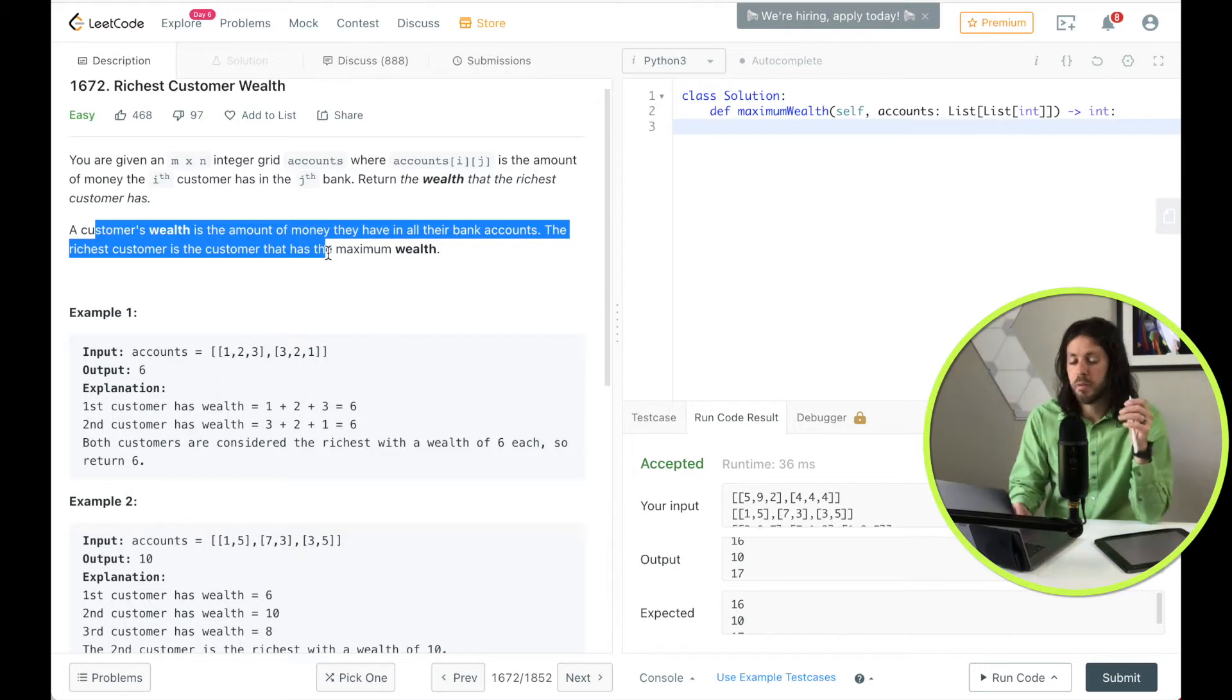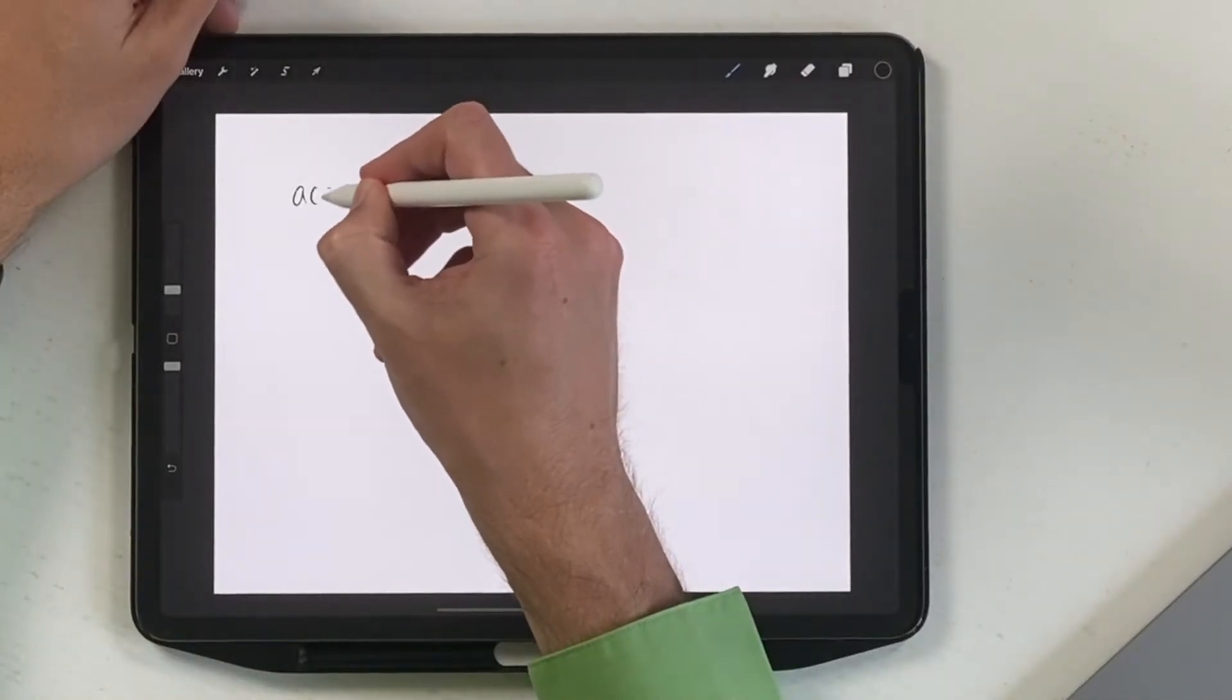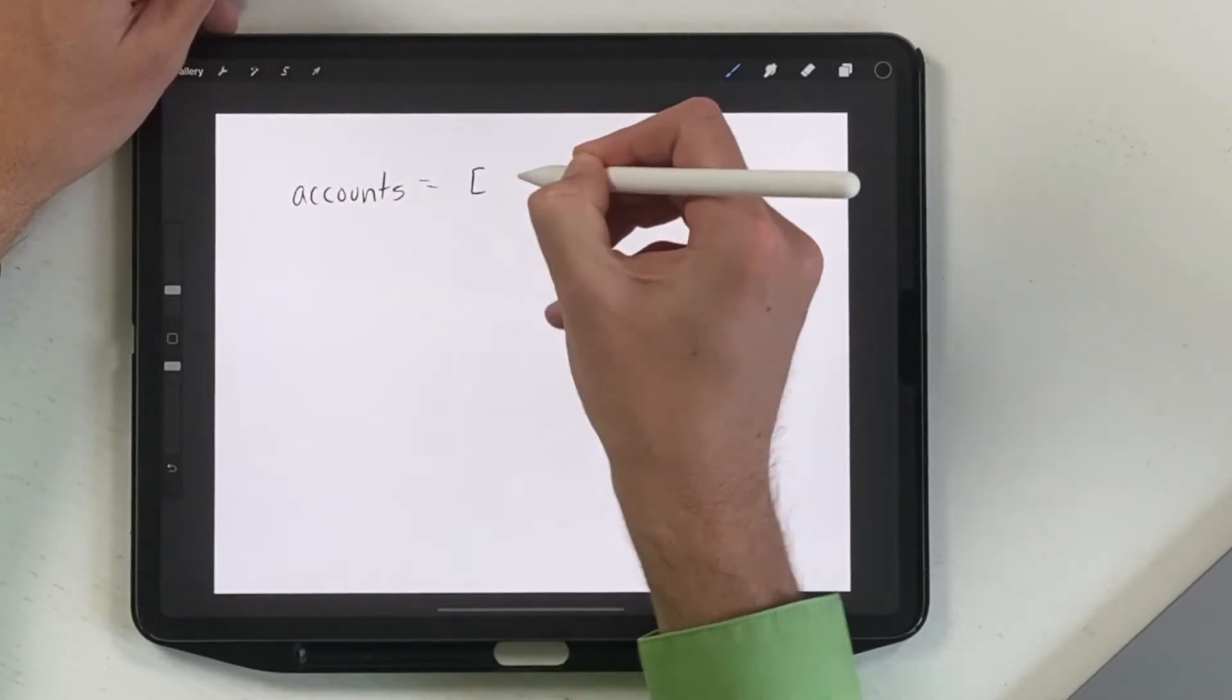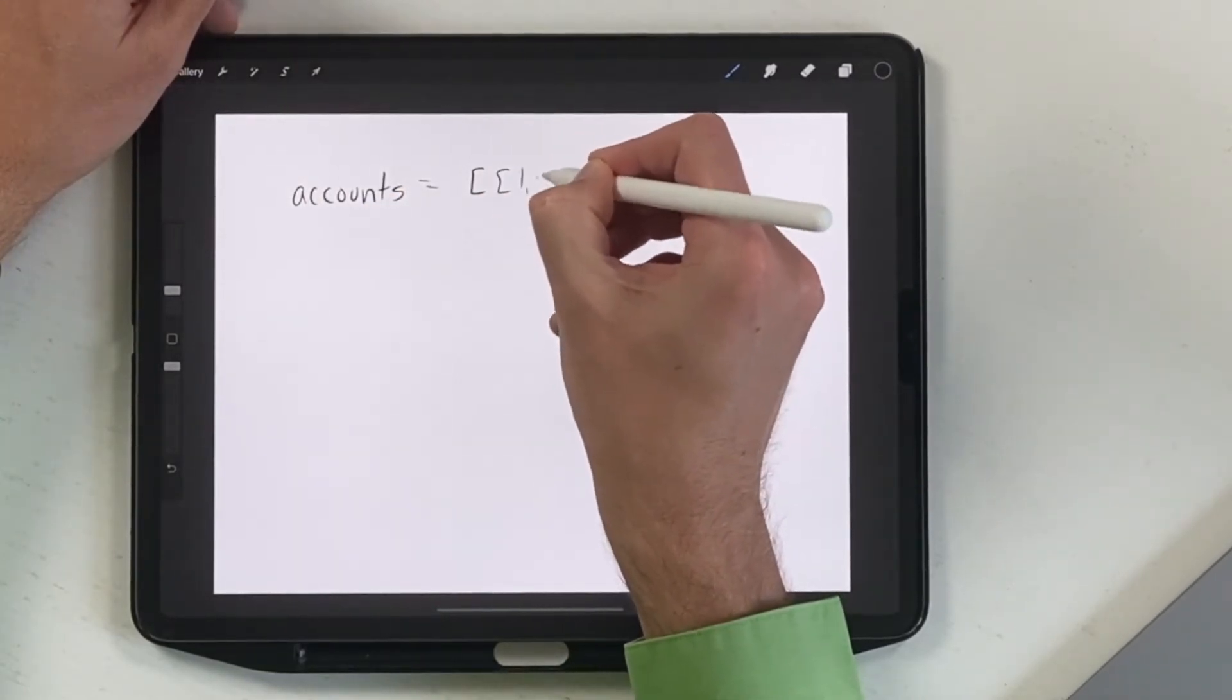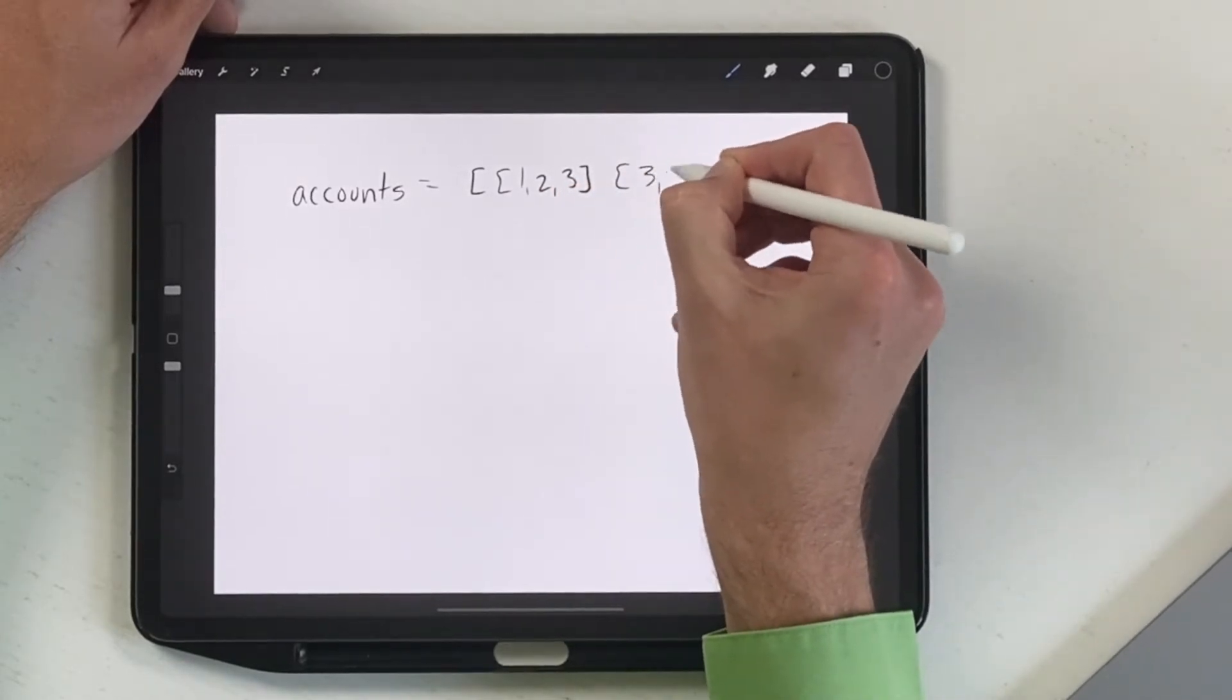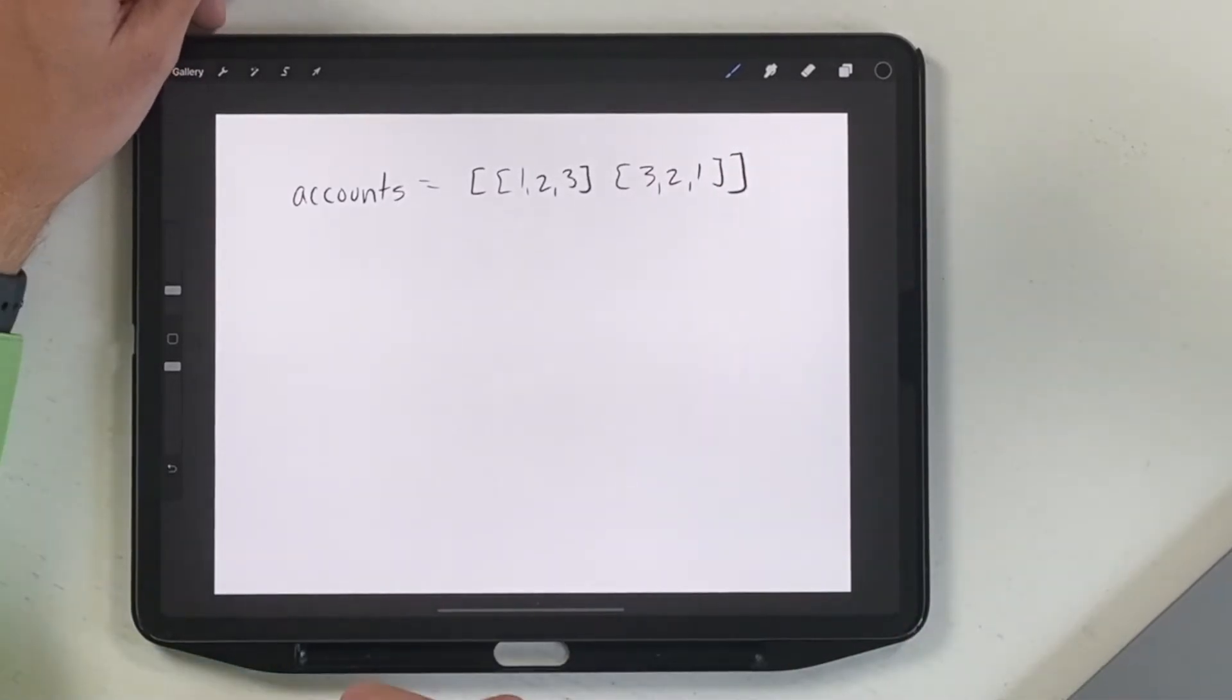So let's talk about the problem. It says you're given M times N integer grid accounts where accounts I and J is the amount of money the Ith customer has in the Jth bank. Return the wealth that the richest customer has. A customer wealth is the amount of money that you have in all their bank accounts. The richest customer is a customer that has maximum wealth.